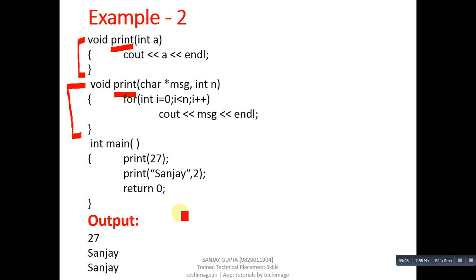With the help of this example you can easily understand that we can use the same names for function definitions but we have to distinguish them by the number or type of arguments. I explained two examples: one had the same number of arguments but different types, and the second had a different number of arguments and different types of arguments.